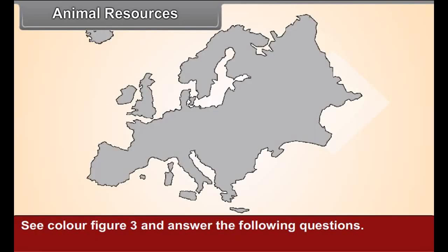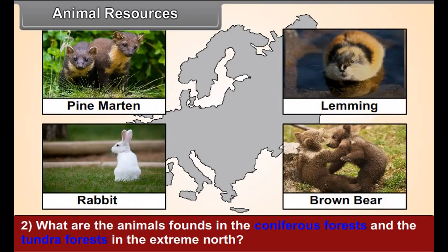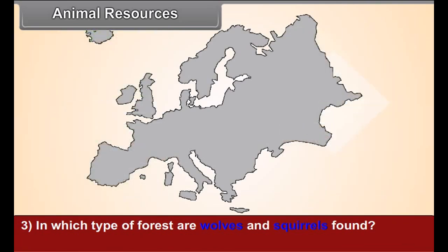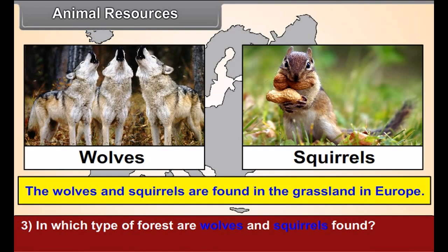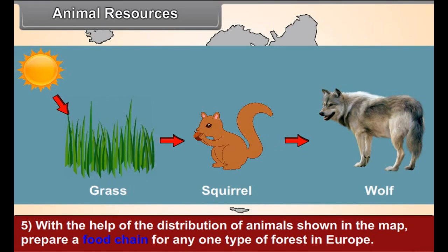Animal Resources. See color figure 3 and answer the following: 1. Which types of fish are found in the seas around Europe? Name them. 2. What are the animals found in the coniferous forests and the Tundra forests in the extreme north? 3. In which types of forests are wolves and squirrels found? 4. In which types of forests are owl, adder and wild boar found? 5. With the help of the distribution of animals shown in the map, prepare a food chain for any one type of forest in Europe.